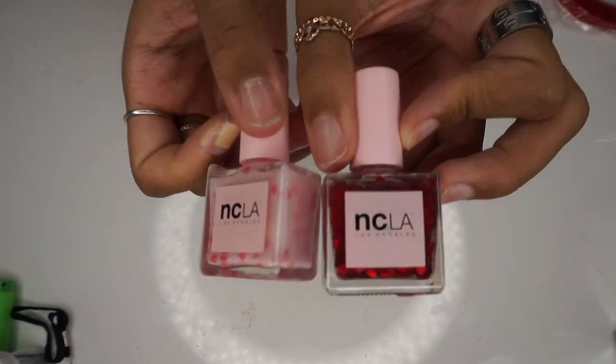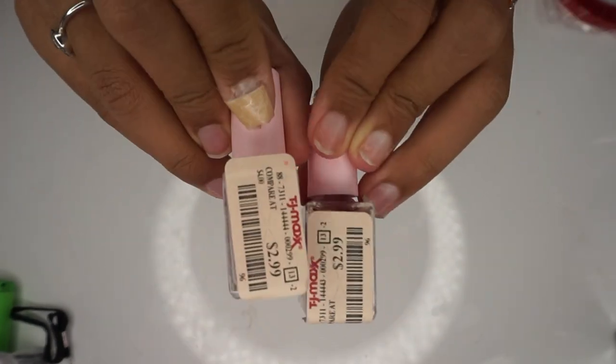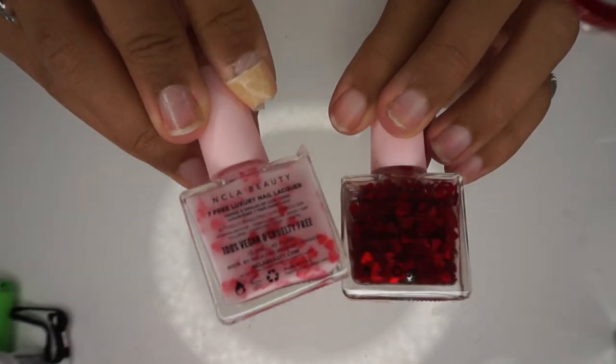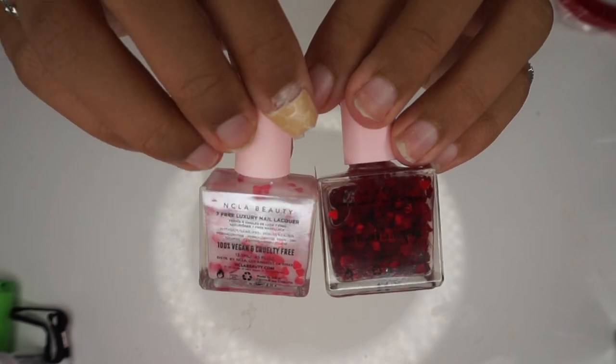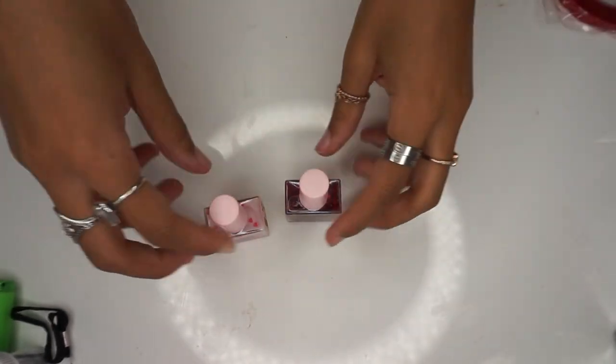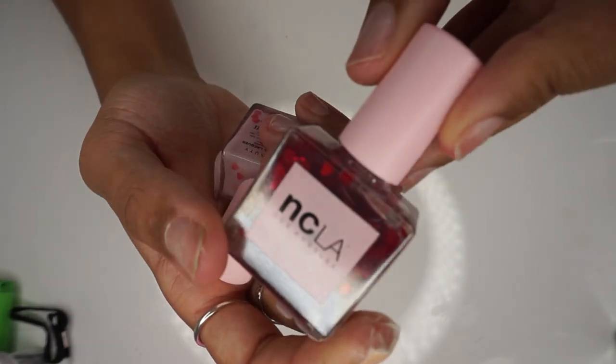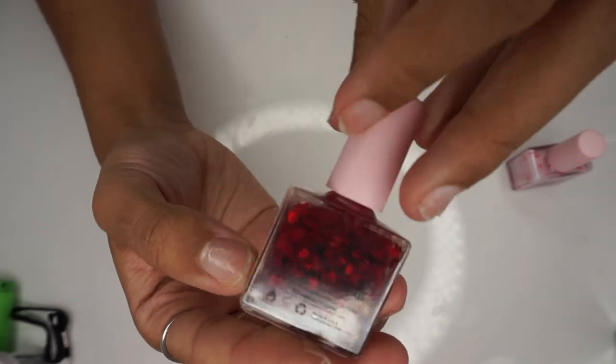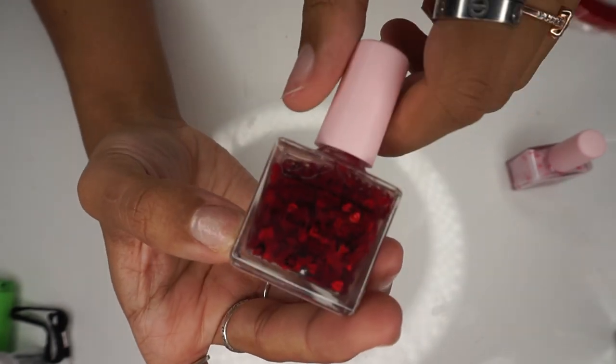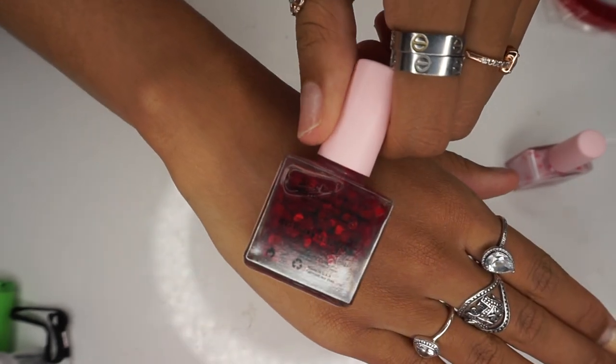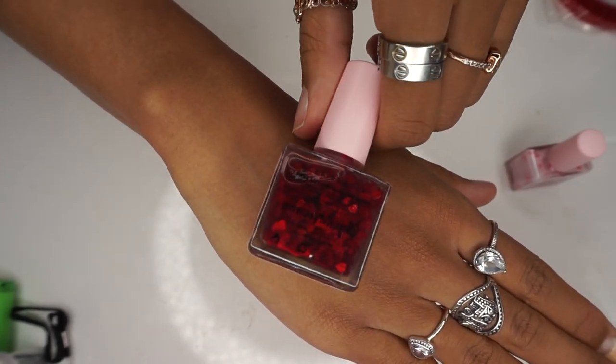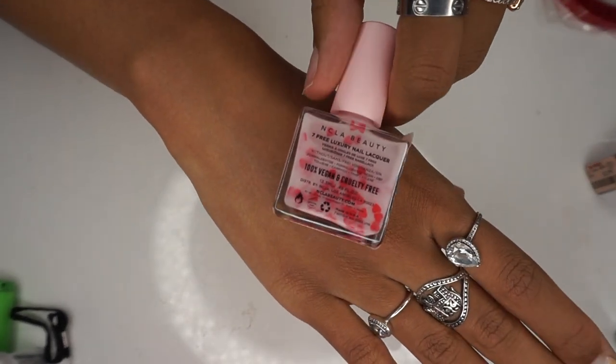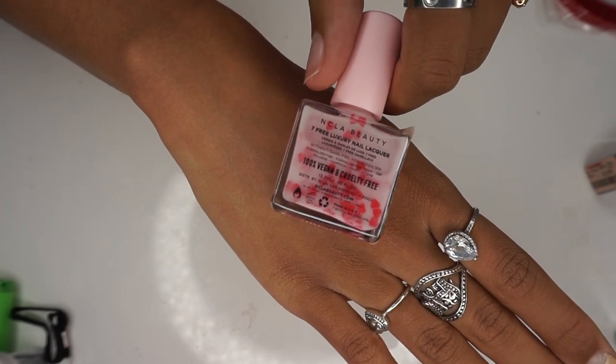Okay, so this was not from Shein, this was actually from TJ Maxx. They were three dollars. These are nail polishes, regular nail polish, not gel. The first one is red hearts in clear polish and the second one gives me like yogurt vibes, soft pink with red hearts in it. I thought they were so adorable. If you guys are interested, check out your local TJ Maxx.